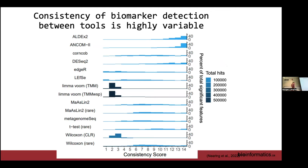That's it for differential abundance — a bit depressing, I know. Any questions? Any favorite differential abundance methods? LEfSe was mentioned — and it was one that showed pretty high false prediction rates in our analysis, so you might want to reassess that one.